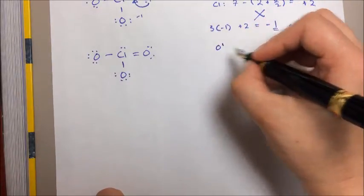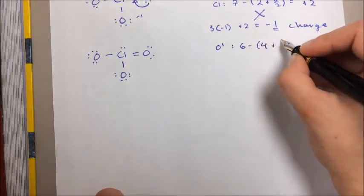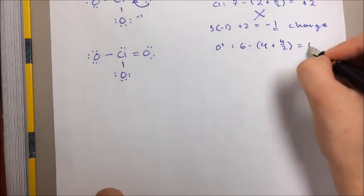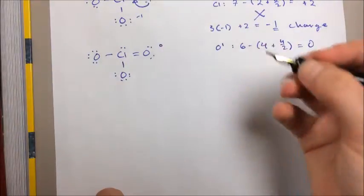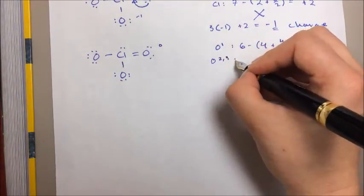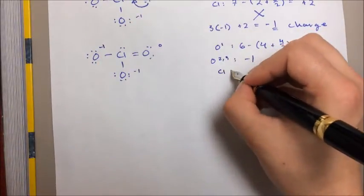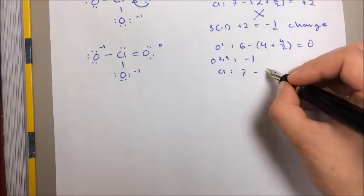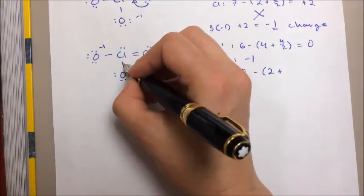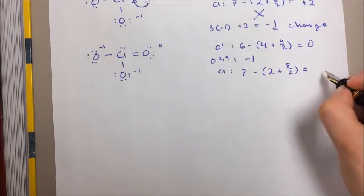Let's do another formal charge check. Oxygen one with the two lone pairs, that's going to be 6 minus 4 plus 4 over 2. That's zero. So we've already reduced the formal charges a bit. Oxygens two and three are still at minus one. But now what about the chlorine? That's going to be 7 minus 2 plus one, two, three, four, eight over two. Giving us a formal charge here of plus one.